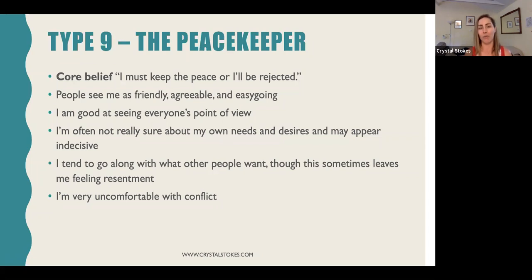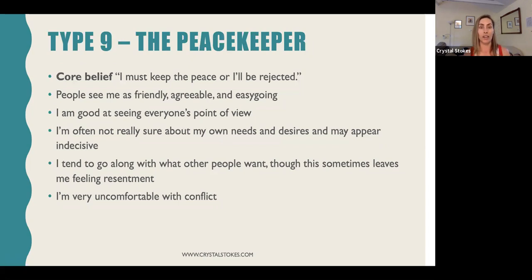Type nines are highly conflict avoidant — whereas the type eight loves conflict and sees it as a way to get stuff done, type nine would rather let go of their own needs and agenda to keep conflict at bay. When working with type nines, it's really important to first help them connect to their own inner landscape — noticing, are you going along with something you don't really want to do? What are your needs? Then secondarily, helping them slowly assert those needs and become more confident dealing with interpersonal conflict, which can be practiced safely in the therapeutic arena and then translated into their wider life.